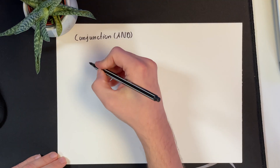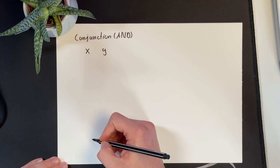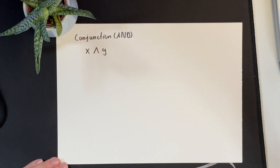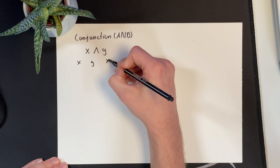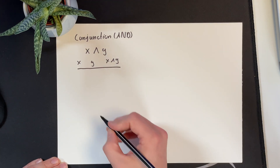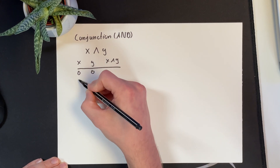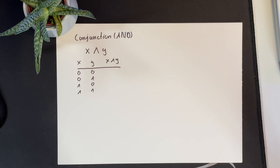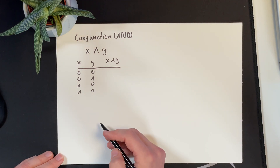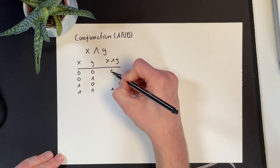The first Boolean algebra operation is the conjunction. The conjunction couples two Boolean expressions X and Y with the AND operator. We can completely define this operator by entering all values for X and Y in a truth table with columns X, Y, and X AND Y. The conjunction only evaluates to 1 if both X and Y are 1; all other combinations result in 0.